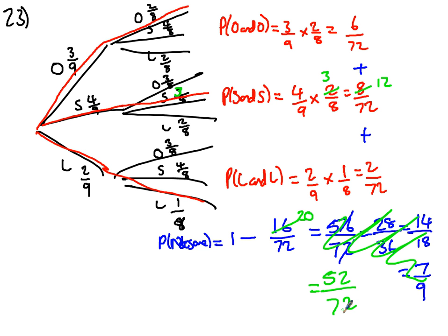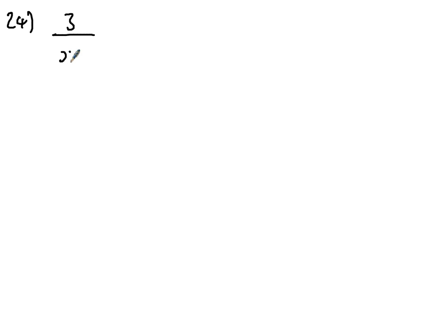I'd get marks for my answers because I've shown clear working out. Question 24: we've got 3/(x − 2) + 8/(x + 3) = 2.